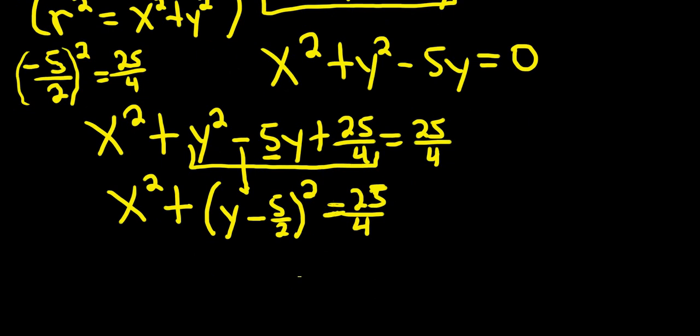And so with this version, you could do the graph. So the center here would be 0, 5 halves. Right? Because it's x minus 0. That's why there's no h there. This is your h, and this is your k in the equation of a circle. r is the square root of 25 over 4. So r is 5 over 2.